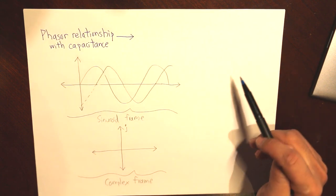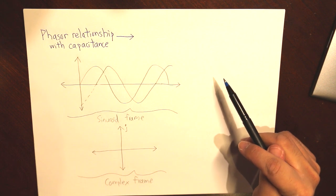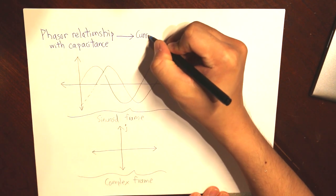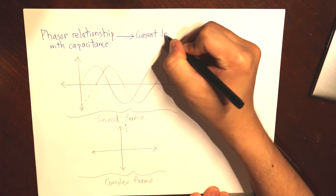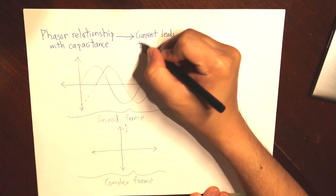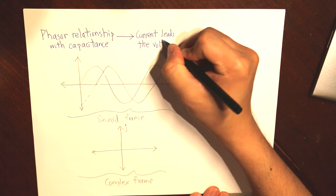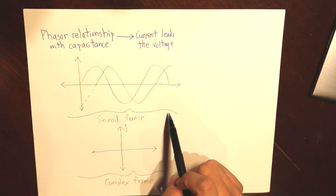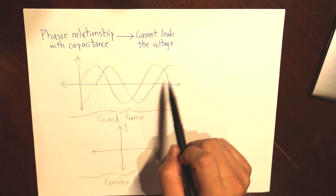The basic fundamental definition of a capacitance is that the current leads the voltage. So now we have the sinusoid frame right here, and we have two different waves.